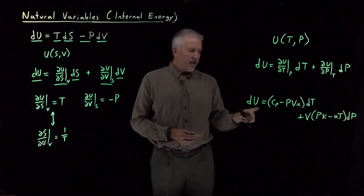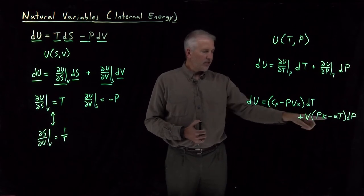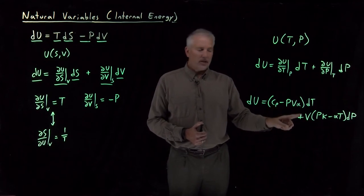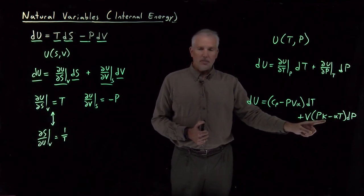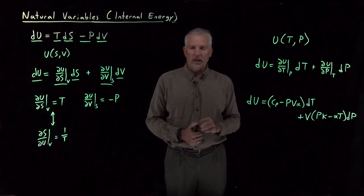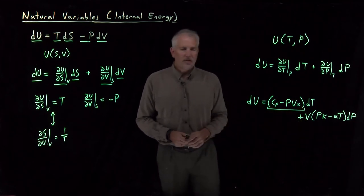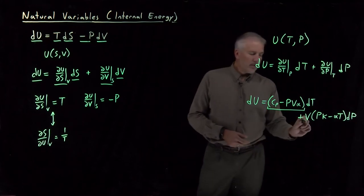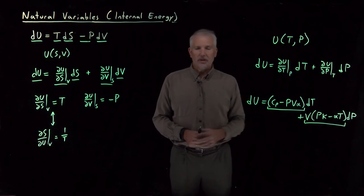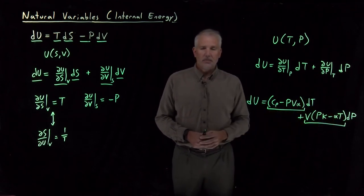There is such an expression: energy changes as some amount times dT plus some different amount times dP. However, writing this down requires variables we haven't yet defined. As a preview, alpha is the thermal expansion coefficient and kappa is the isothermal compressibility coefficient — properties of a material we can calculate or look up. The coefficient in front of dT involves heat capacity, pressure, volume, and alpha; the coefficient in front of dP involves volume, temperature, pressure, and both alpha and kappa. It's a much more complicated expression.